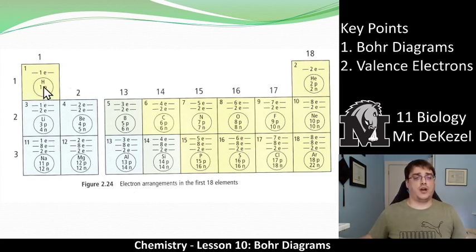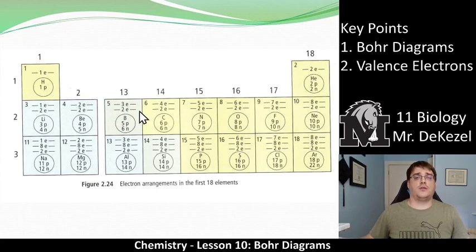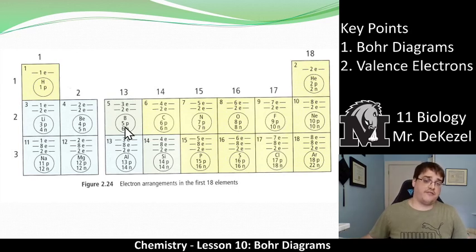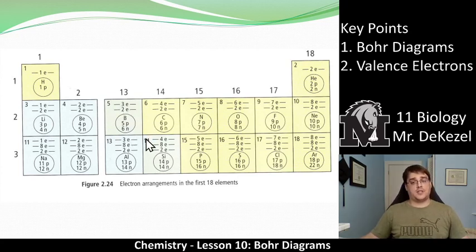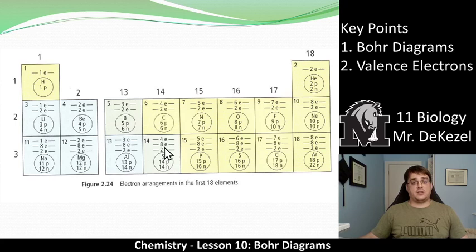Here is the arrangement of the first 18 elements. Hydrogen has one proton and one electron in the first shell. Helium has two protons, two neutrons, and two electrons — both in the first shell. Looking at boron, atomic number five: five protons and six neutrons, with two electrons in the first energy level and three in the second. For silicon, atomic number 14: 14 protons, 14 neutrons, two electrons in the first shell, eight in the second shell, and four in the valence shell. These are valid Bohr diagrams for each of the first 18 elements.